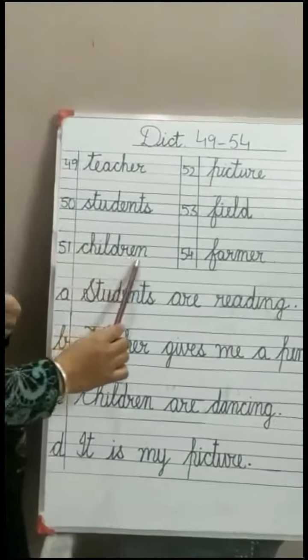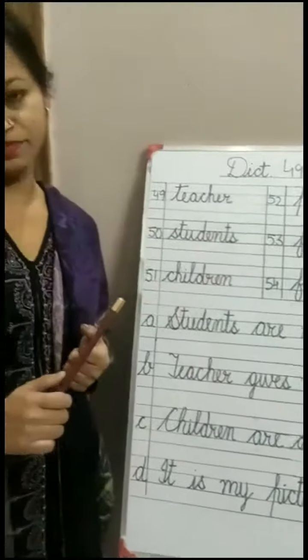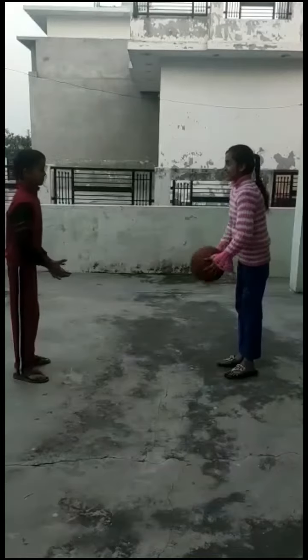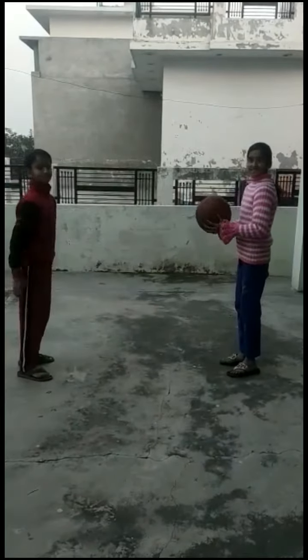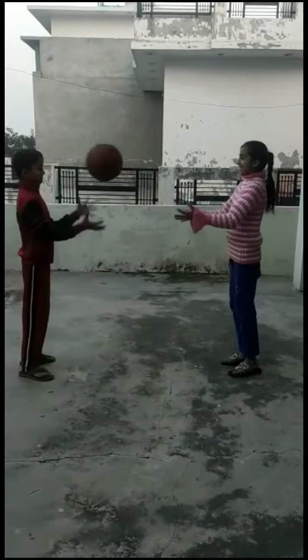Next is children. Children means kids — boys and girls. Boys and girls come under children who are less in age. Children are playing.